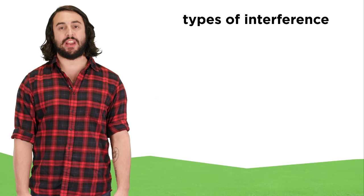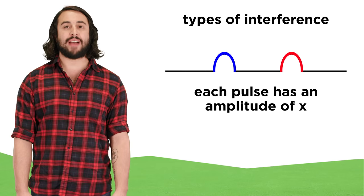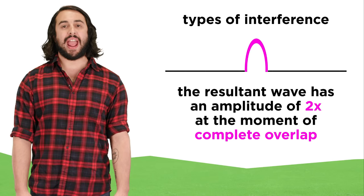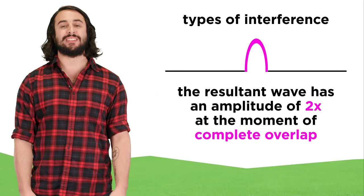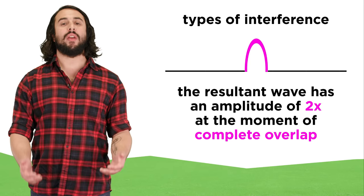Say two individual wave pulses are traveling towards each other and they have the same amplitude. When these meet, the amplitudes at each point will be added together to produce the respective points on the resultant wave, so there will be a moment where there is one wave with twice the amplitude. Then the two waves continue in the direction they were moving in.